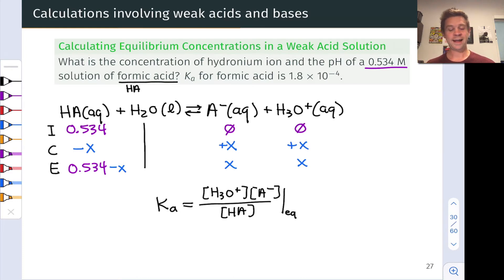Now with the Ka value being quite small, 10 to the negative 4 relative to the initial concentration of acid at about 10 to the negative 1, we can make the X is small approximation here. Meaning the equilibrium concentration of HA will be pretty close to 0.534, so let's just call it 0.534 to simplify the math.